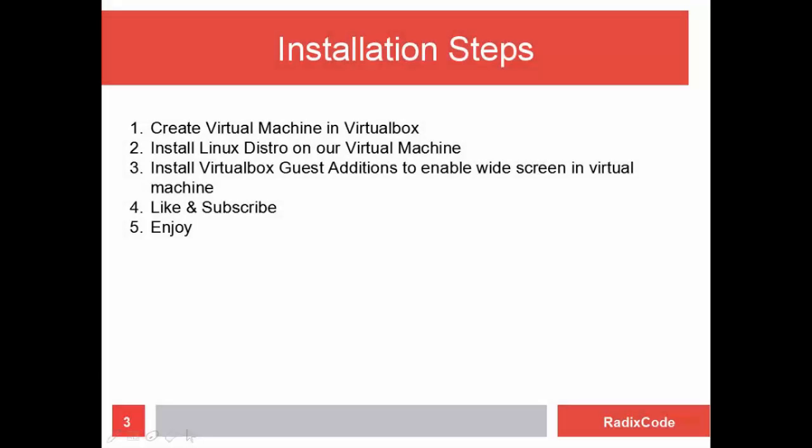Let's see what we are going to do in this video. First of all, we will create a virtual machine in VirtualBox. After that we will install Linux in VirtualBox, and after installing Linux we will install VirtualBox Guest Additions to enable widescreen of our Linux distribution.